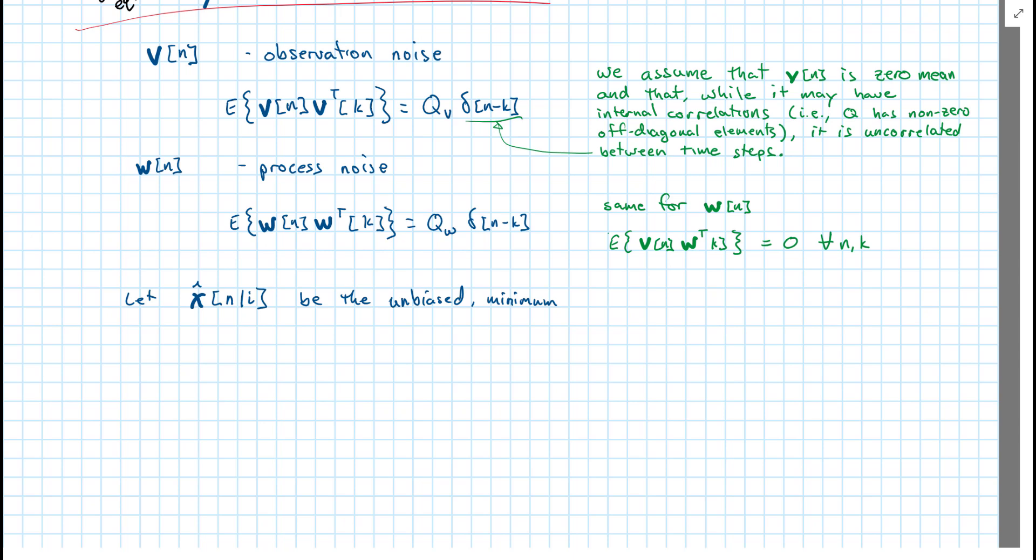We're going to have many concepts like this with the Kalman filter. And instead of defining new quantities, which would explode the number of variables that we need, we're going to introduce this idea. Namely, we're going to let x hat of n given i be the unbiased minimum mean squared error,